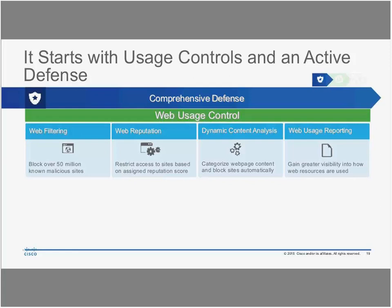Web reputation: for sites that are new and we don't know about, we use web reputation as a scoring mechanism to define which domains and URLs we're going to allow. This is based on two things: malicious content, and appropriate versus inappropriate content categories.